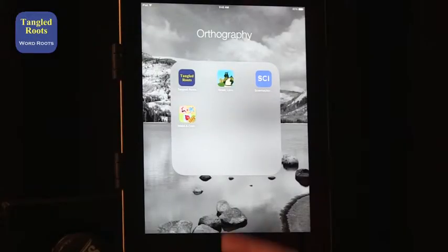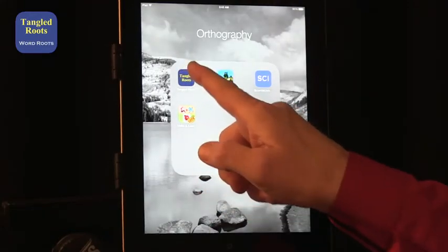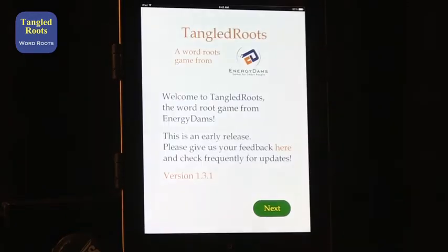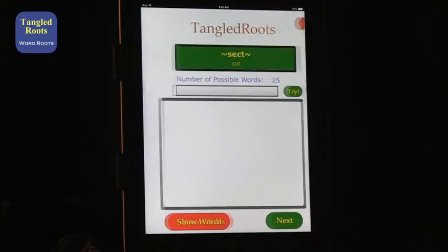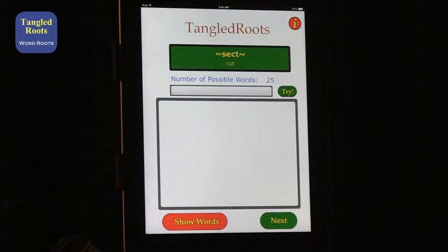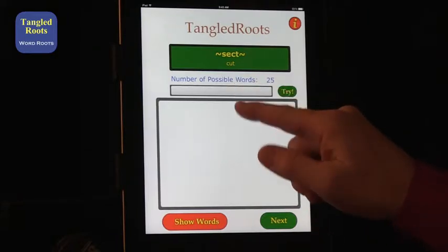The first app is actually an iPhone app called Tangled Roots. When you go into Tangled Roots, it gives you a root word, in this case sect. It tells you what it means and then asks you to find as many words as you can that come from that root. We're not just talking about inflected endings like S for plural or ED.